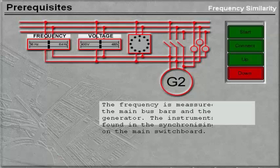The frequency is read between the main bus bars and the incoming generator. The instruments are found in the synchronizing section on the main switchboard.